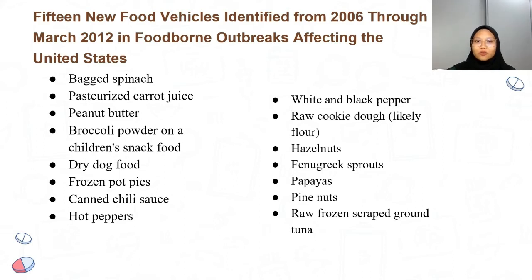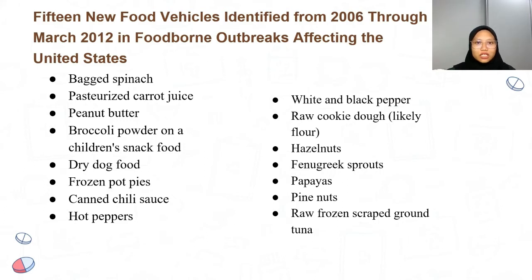The list of implicated foods is regularly expanded as new ones are identified in new outbreaks. For instance, between 2006 and early 2012, 15 new specific food types were identified as food vehicles in outbreaks affecting the United States. As food vehicles increase, so does the emergence of foodborne pathogens, resulting in new and emerging foodborne pathogens.